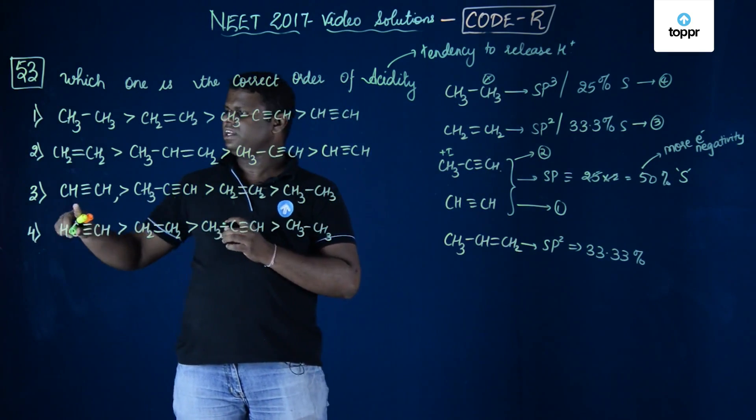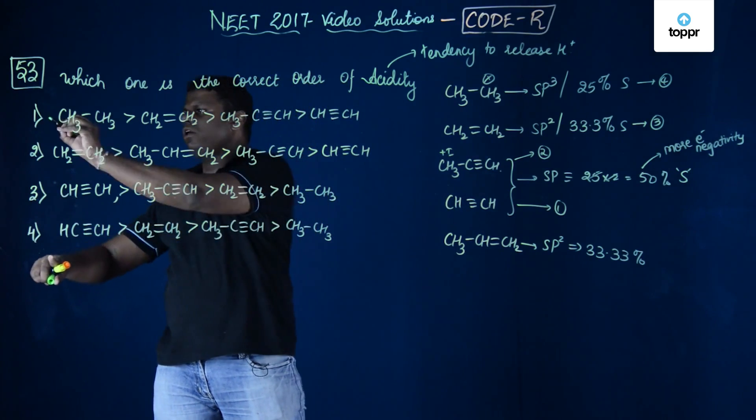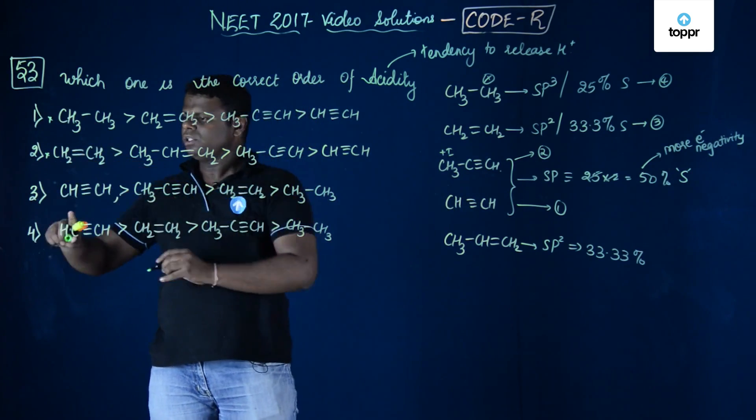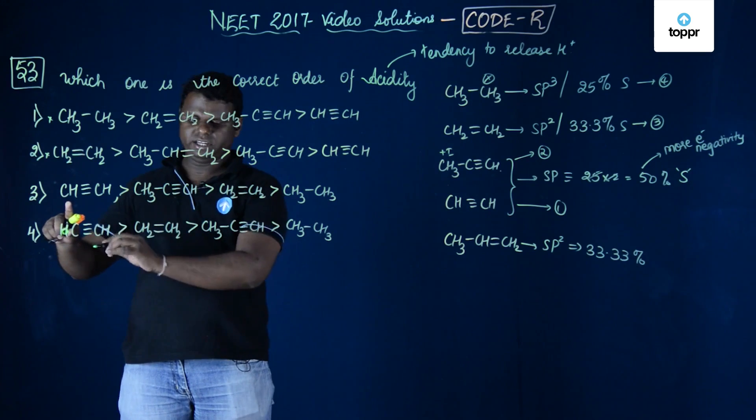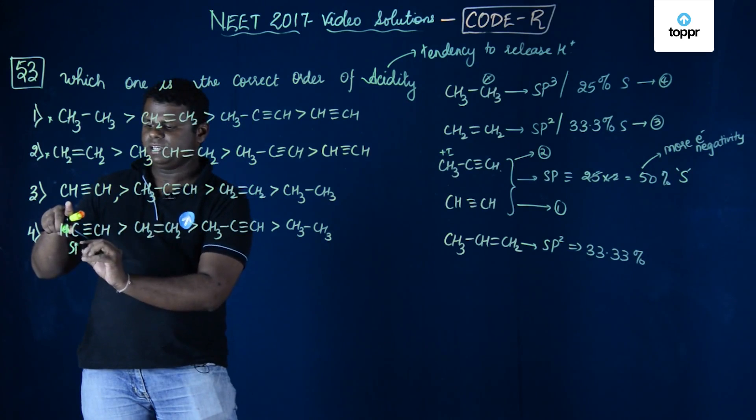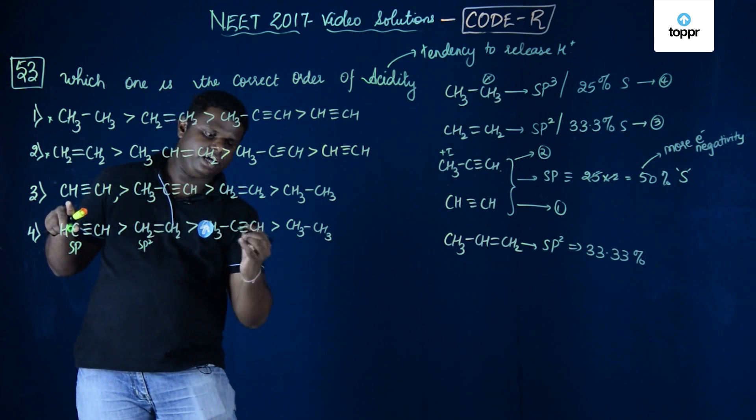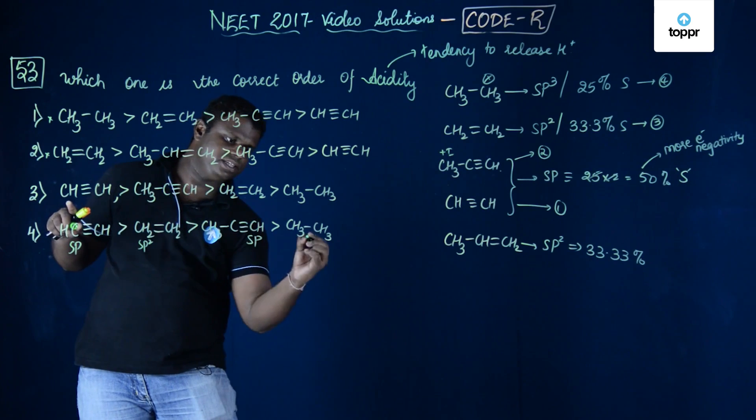That means the option would not be definitely 1 and 2. Let's see this acetylene and acetylene. In this case, this is SP2. This is SP, this is SP2, this is basically again SP and this is SP3.